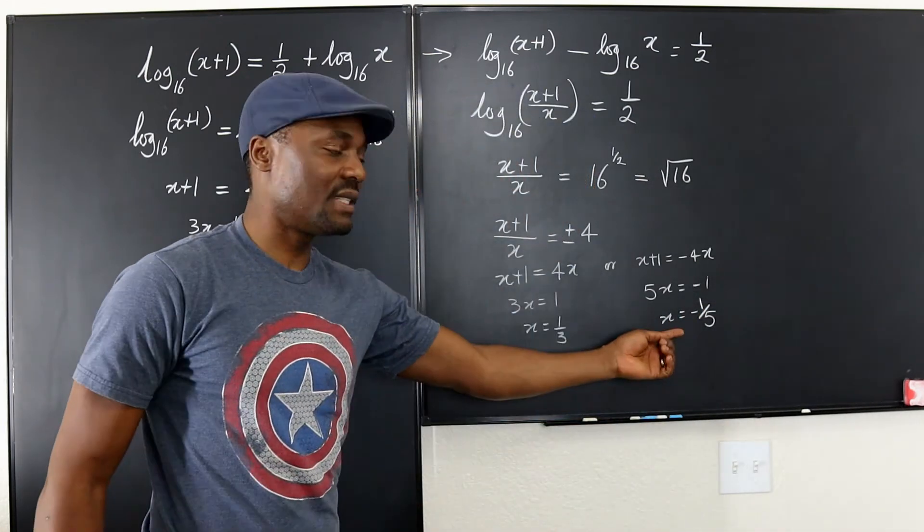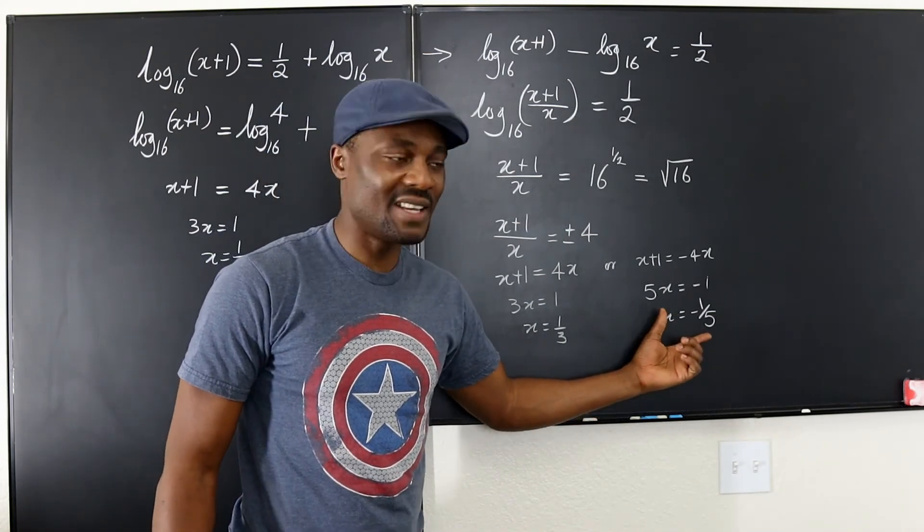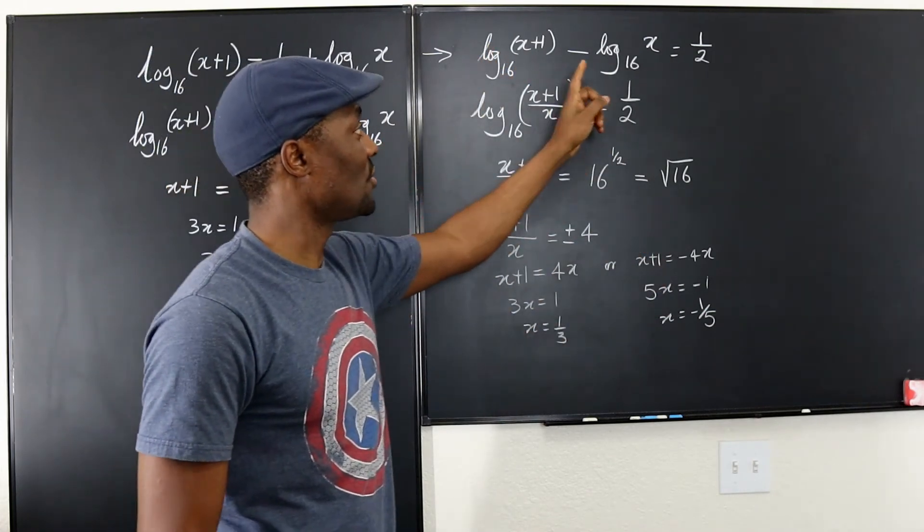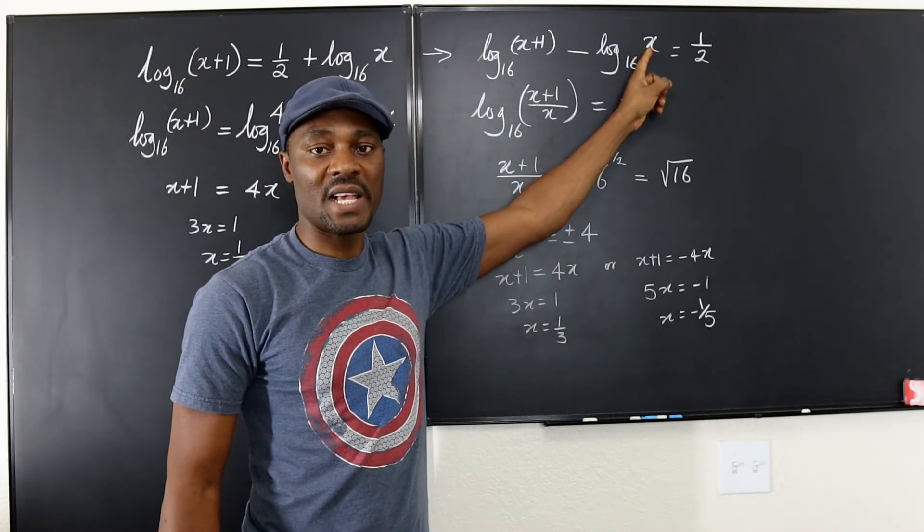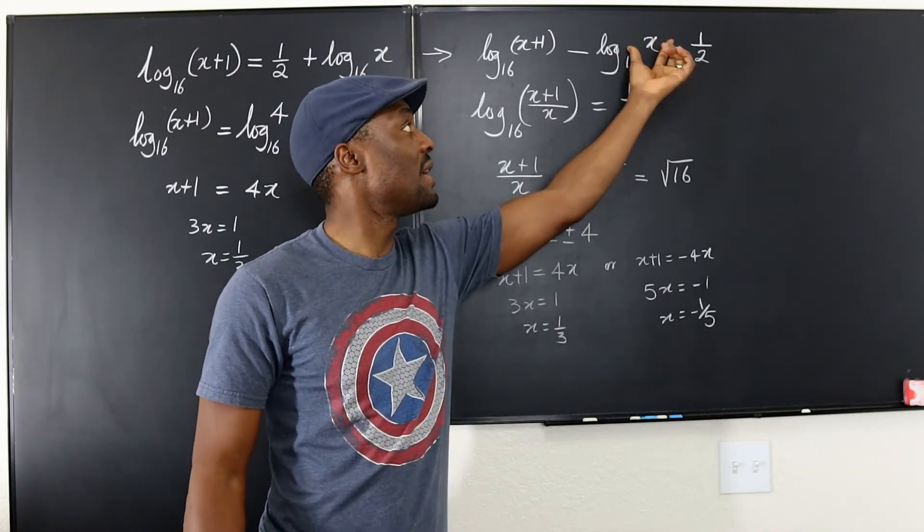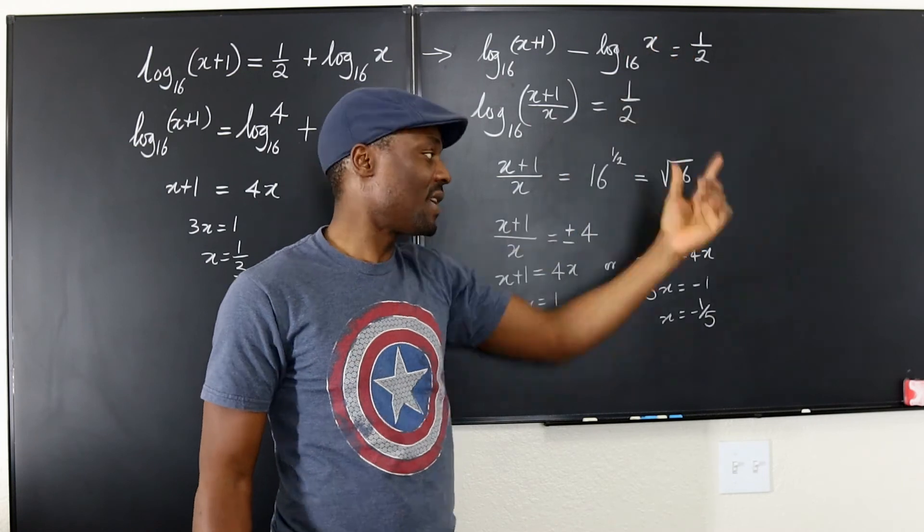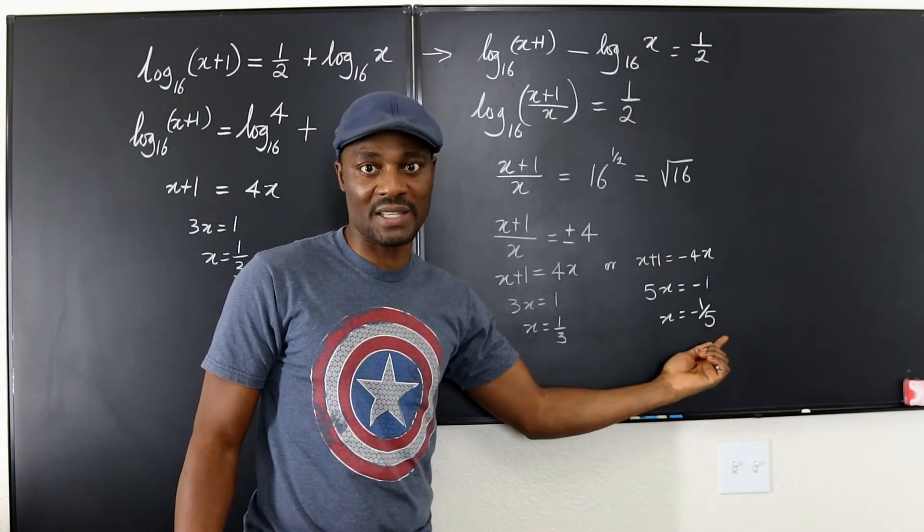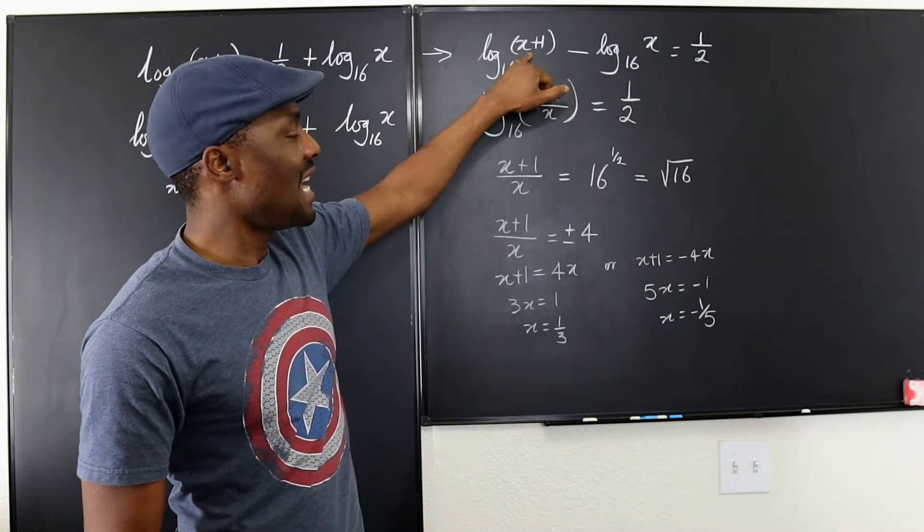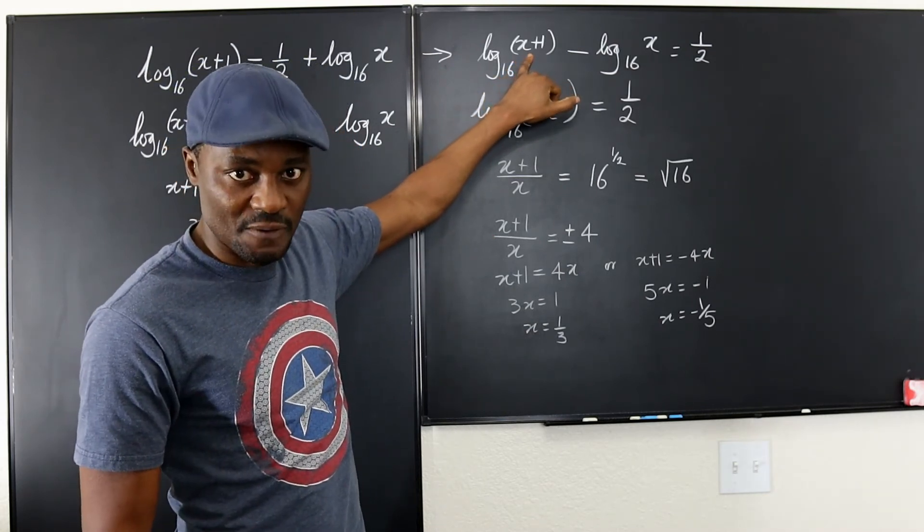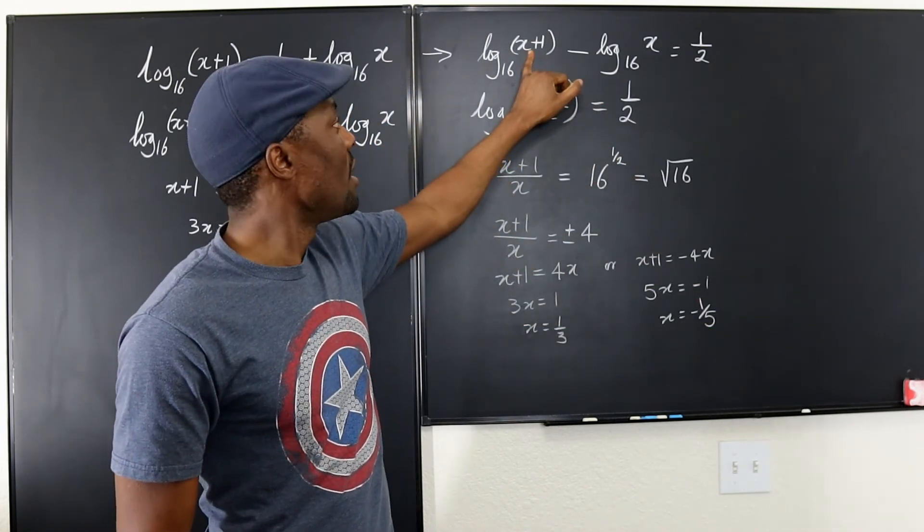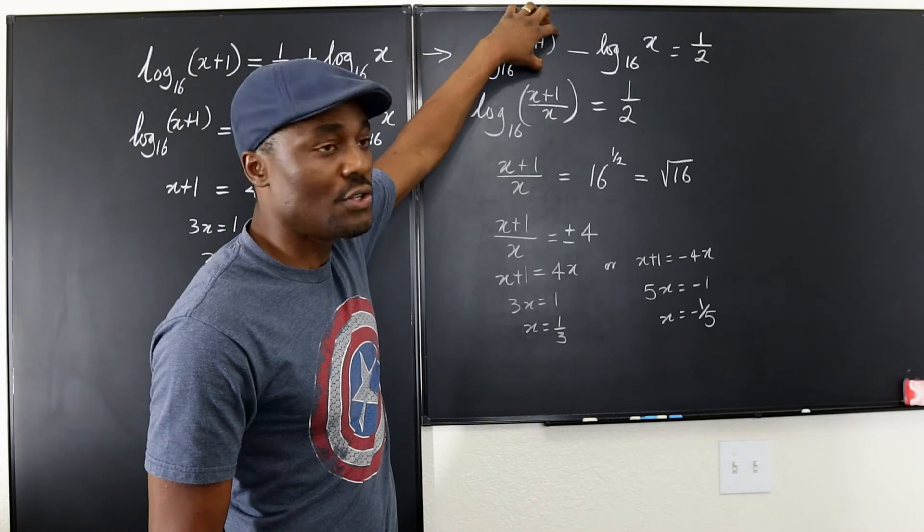The problem with this is that it is possible that your x is negative 1 over 5. But if you go back to the original question, x cannot be negative. Now, if x had been combined with something else and eventually the arguments will not end up being negative, you can accept a negative answer for your x. But now, if you look at the things you have, if you put it here, it's acceptable. Because negative 1 over 5 plus 1 is going to be a positive argument.